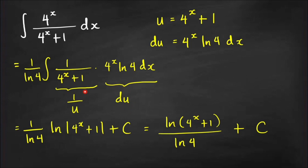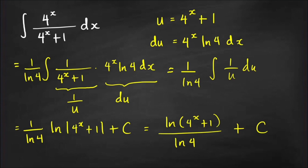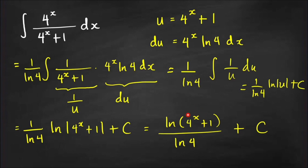Since ∫(1/u)du = ln|u|, we get (1/ln4)·ln|u| + C. Writing u back in terms of x: (1/ln4)·ln|4^x + 1| + C. We can drop the absolute value because 4^x is always positive, giving us ln(4^x + 1) / ln4 + C.